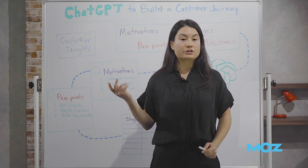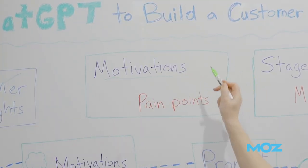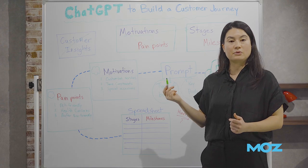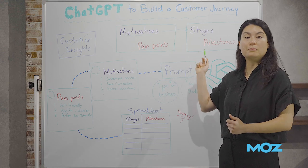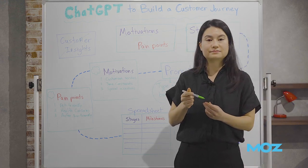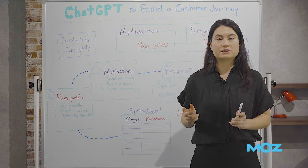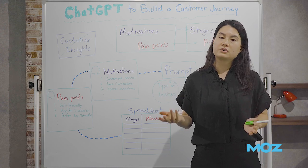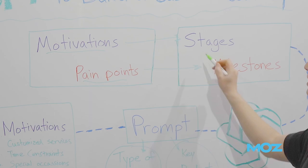In our journey, the motivations will map to journey stages, and the pain points will map to milestones. Milestones are the key search moments during a user's search, sort of like touch points, and they are nested under the journey stage.